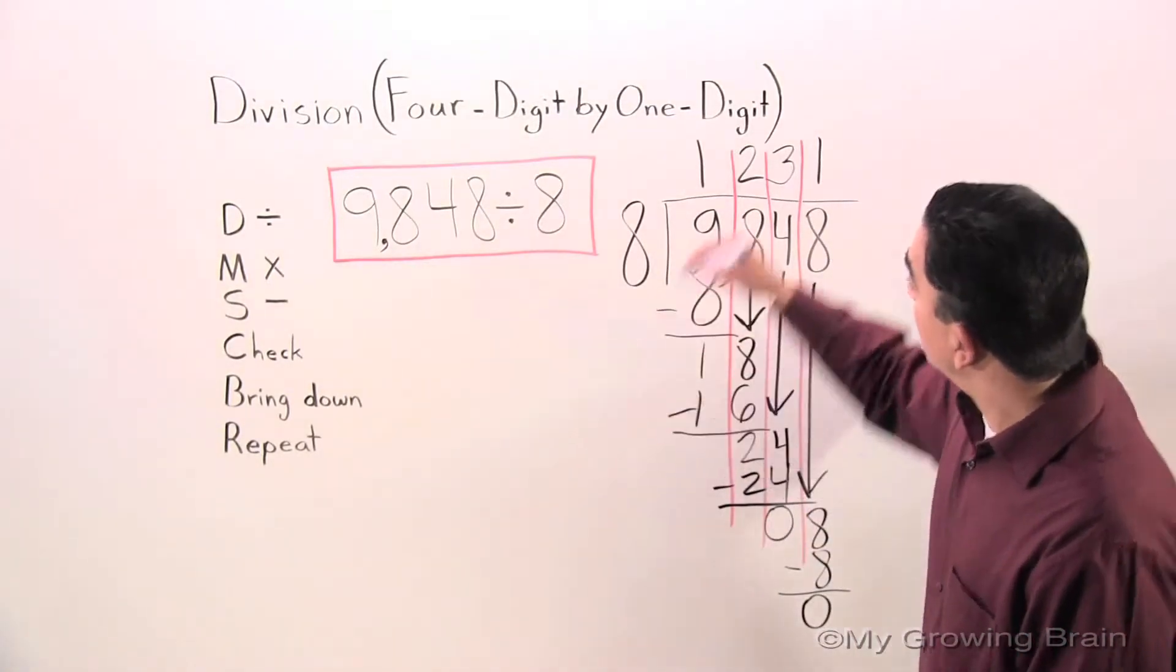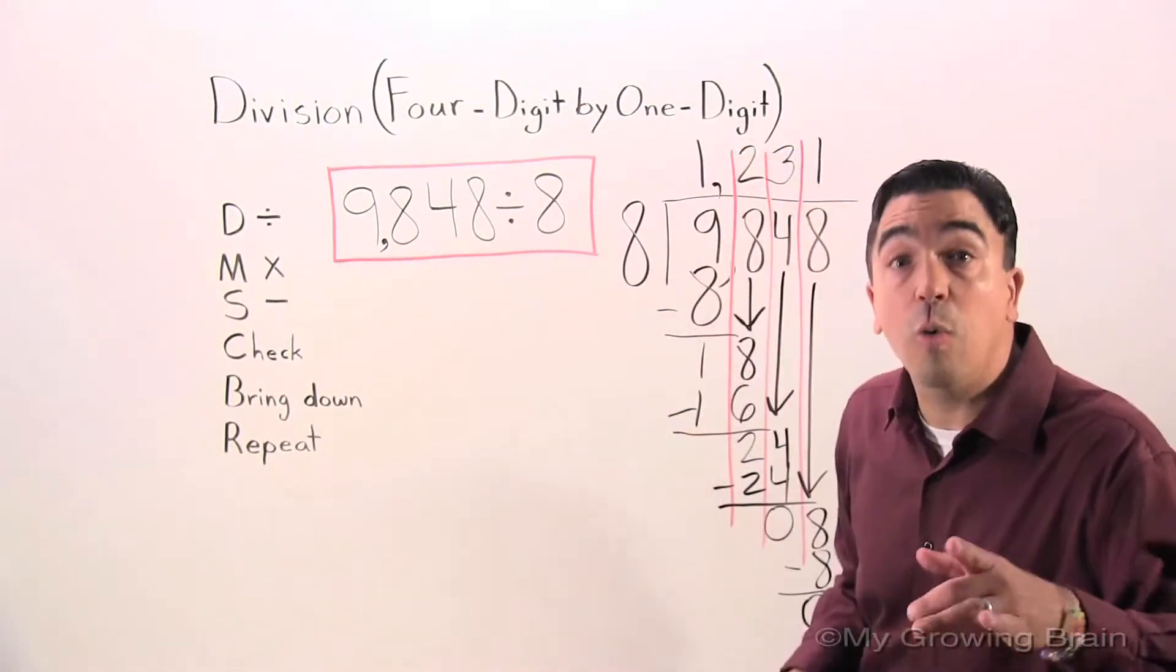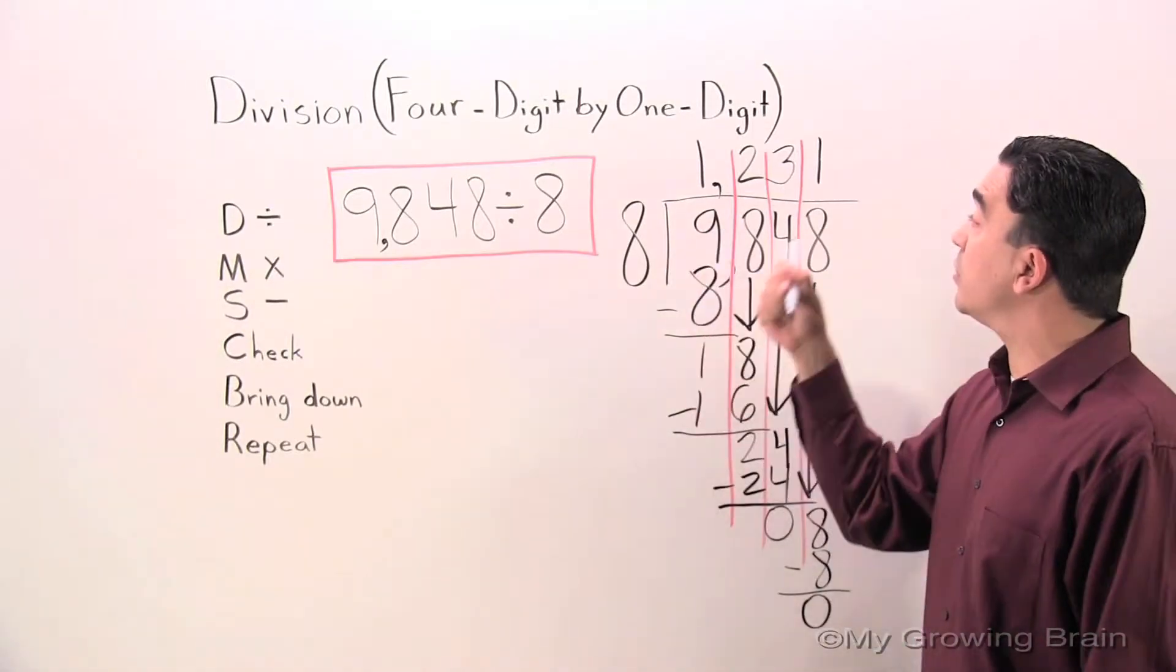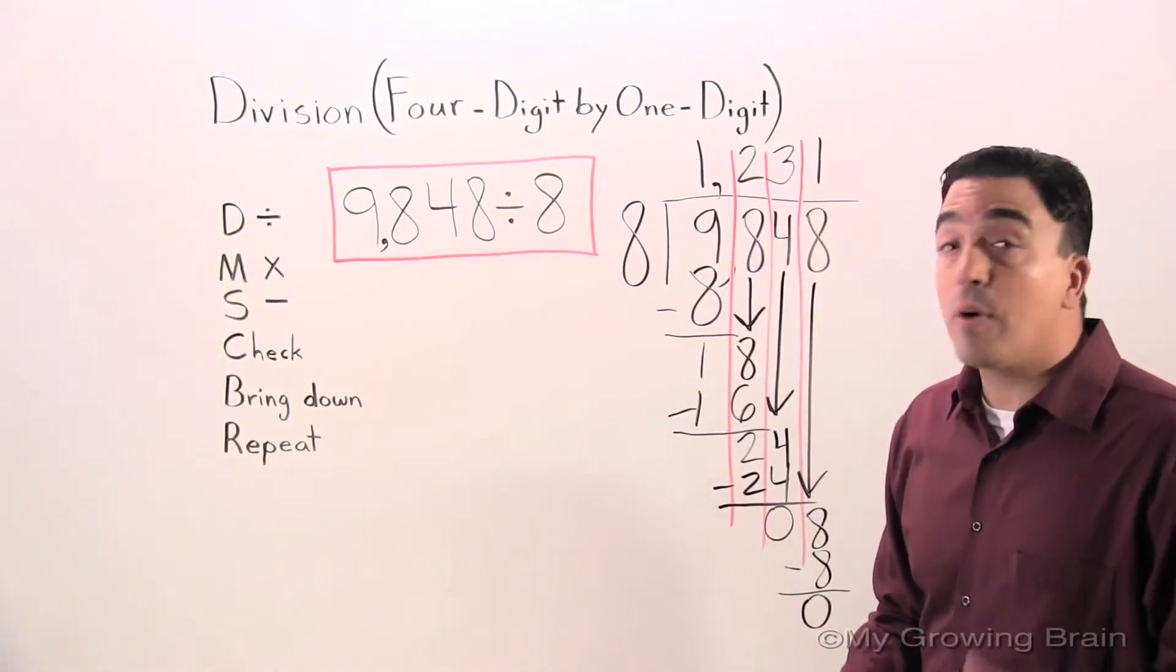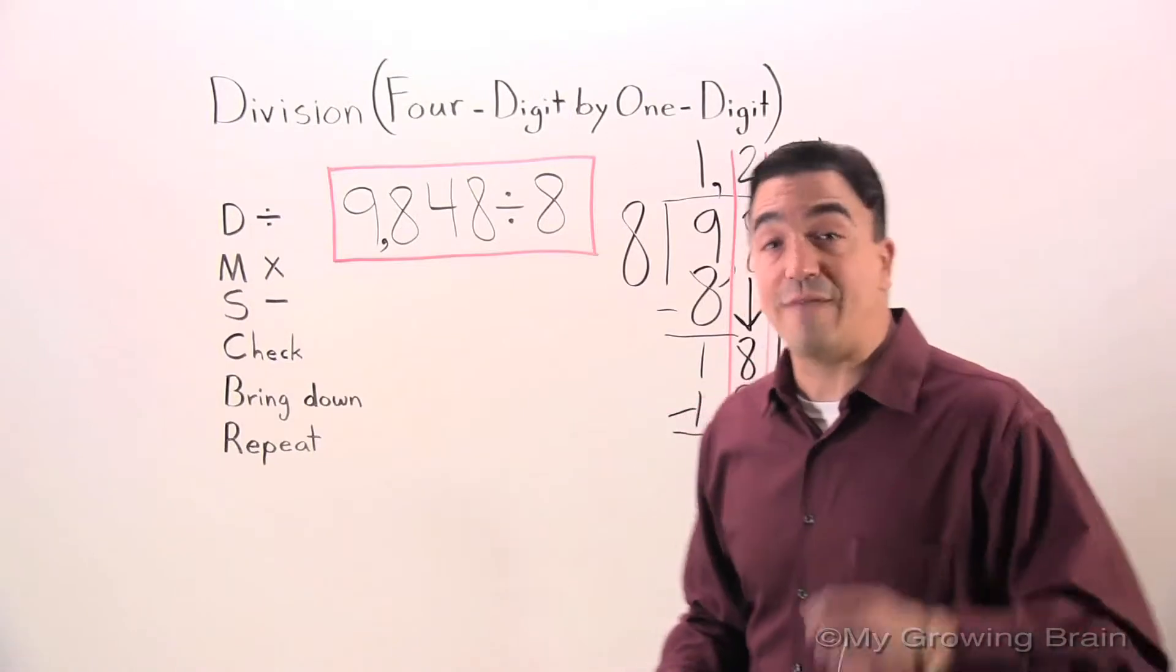So, our answer, or quotient, is 1,231. But we're not done yet, folks. We still have to check our work.